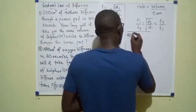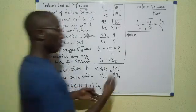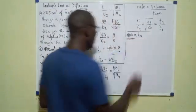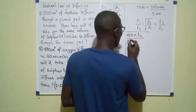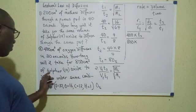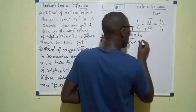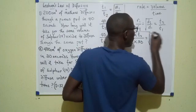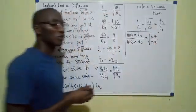So v1 is 400 times t2, the time for sulfur(IV) oxide we are looking for, over the volume of the other gas, 800, times the time for the first gas, 30 seconds, equals the square root of 64 over 32.